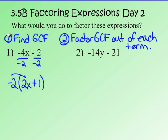The other way I can check is to expand this — multiply using the distributive property. Negative 2 times 2x gives negative 4x. Negative 2 times positive 1 gives negative 2. Did I get back to my original expression? Yes.